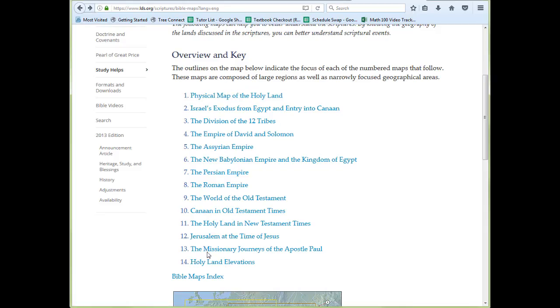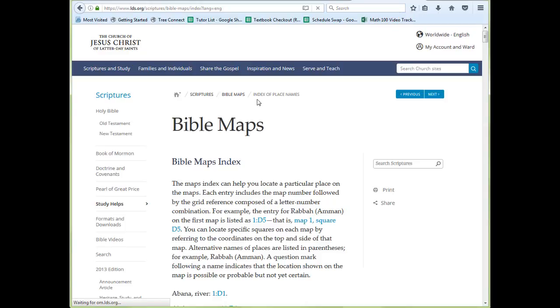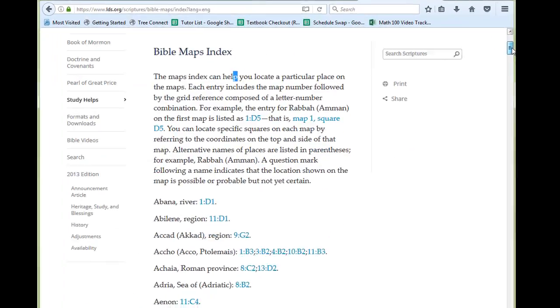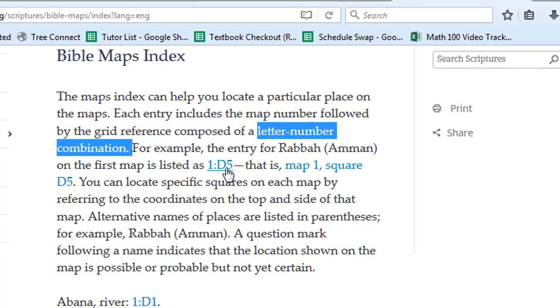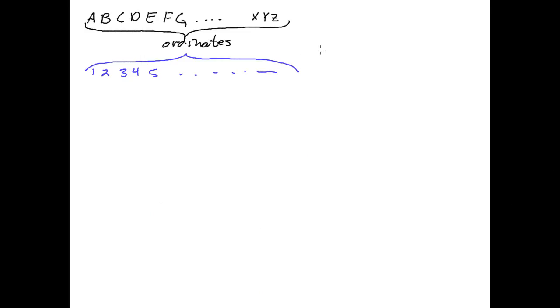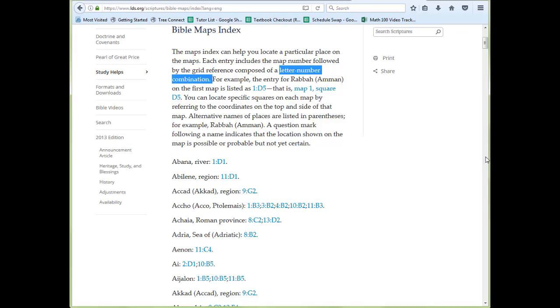When we go back to the list of maps, there's something called a Bible maps index. It explains how to use the maps: each entry includes the map number followed by the grid reference composed of a letter-number combination. They took two ordinates such as D from the alphabet and 5 from the numbers, and D5 together is called a coordinate because you are now using two ordinates together to specify a location.